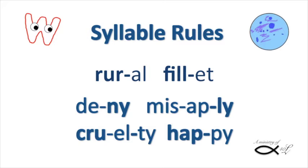Accented and unaccented Y's follow a different pattern. The bolded syllables are accented. When Y is part of an accented syllable, it will have its normal long I sound, as in 'deny' and 'misapply.' When Y is unaccented at the end of the word, it usually has the sound of E, as in 'cruelty' and 'happy.' Other syllables at the end of a word will usually schwa.